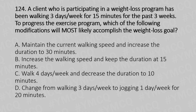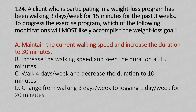To progress the exercise program, which of the following modifications is most likely to accomplish the weight loss goal? Option A: maintain the current walking speed and increase the duration to 30 minutes. Option B: increase the walking speed and keep the duration at 15 minutes. Option C: walk four days per week and decrease the duration to 10 minutes. Option D: change from walking three days per week to jogging one day per week for 20 minutes. The answer is option A — maintain the current walking speed and increase the duration to 30 minutes.